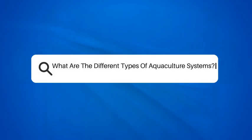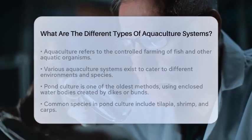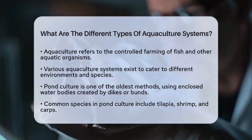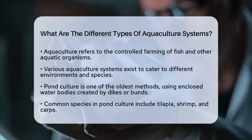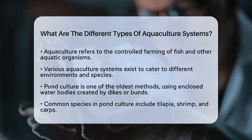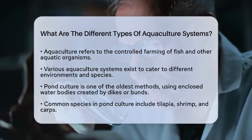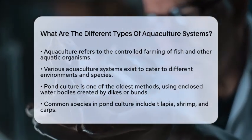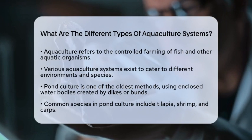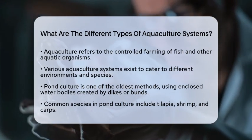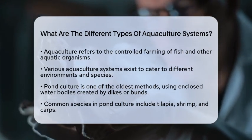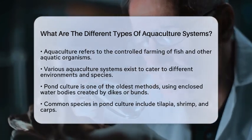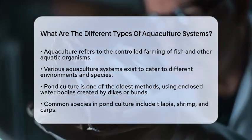What are the different types of aquaculture systems? If you have ever wondered how we can sustainably farm fish and other aquatic organisms, you are in the right place. Aquaculture, or the controlled cultivation of aquatic life, includes various systems that cater to different environments and species. Let's break down the main types of aquaculture systems and see how they fit into sustainable practices and the management of Earth's natural resources.